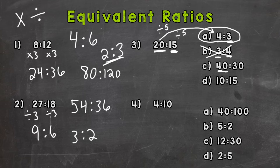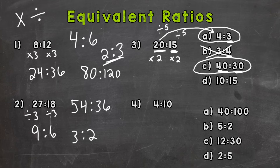For C — how do I get 20 to equal 40? I can do 20 times 2. What happens if we multiply 15 by 2? We get 30. So C — 40 to 30 — does work out; it is an equivalent ratio. Now D has a 10 to start. 20 divided by 2 gives me 10, but 15 divided by 2 is not a whole number, so D is not equivalent.